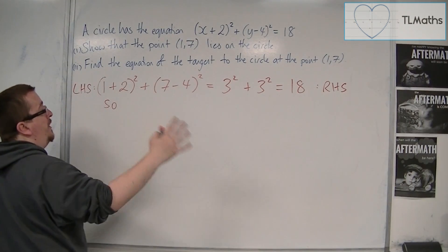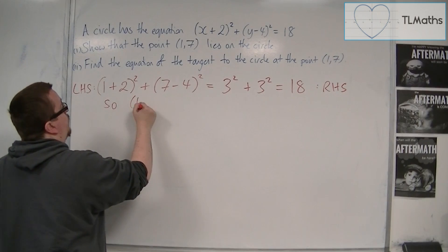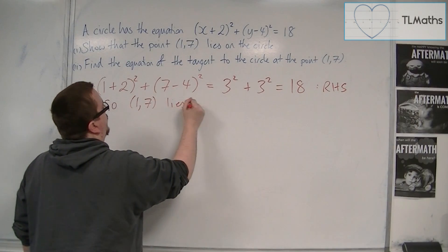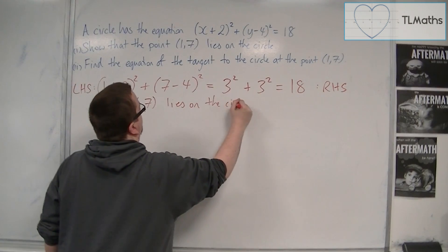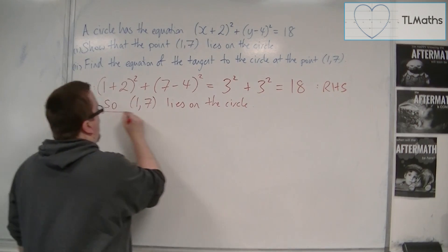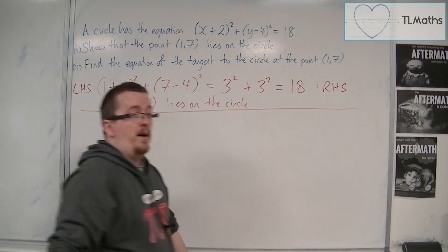So, because the left hand side is the same as the right hand side, (1, 7) lies on the circle. Okay, and that's what we need to show for part i.